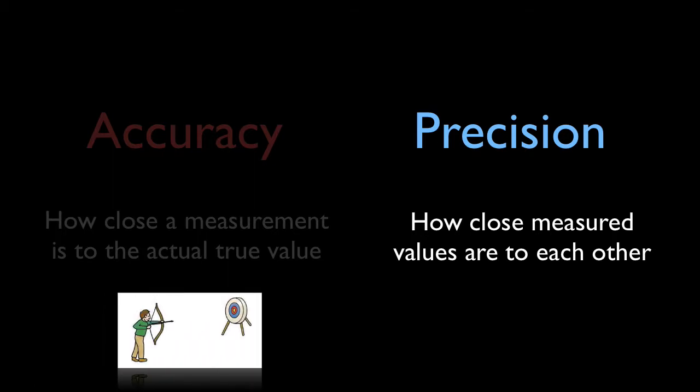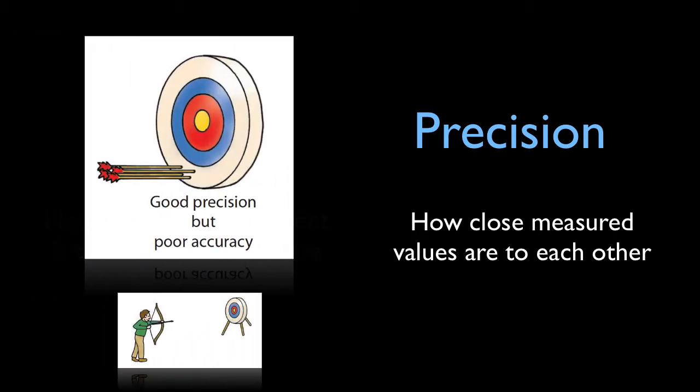You can be precise while not accurate, as shown by this archer. A precise instrument yields consistent results within a narrow range. The greater the precision, the narrower that range.